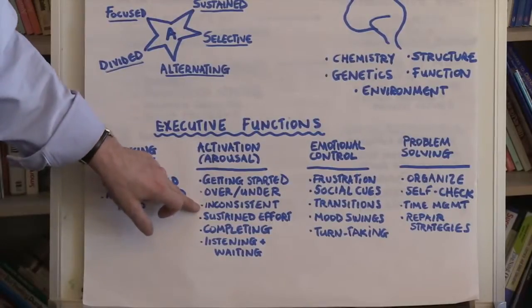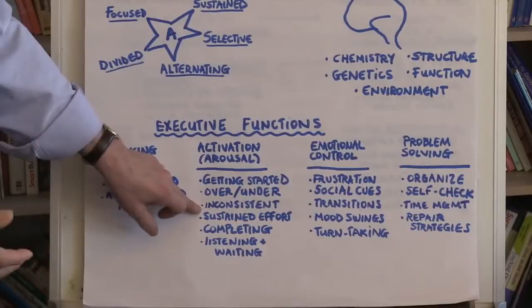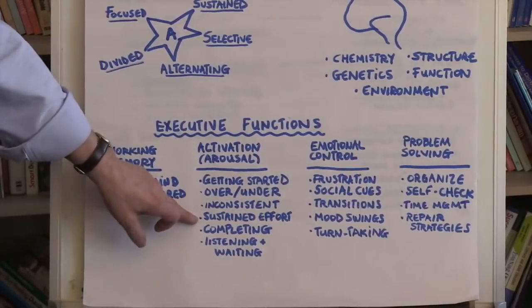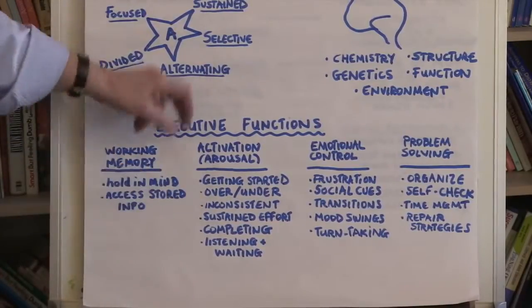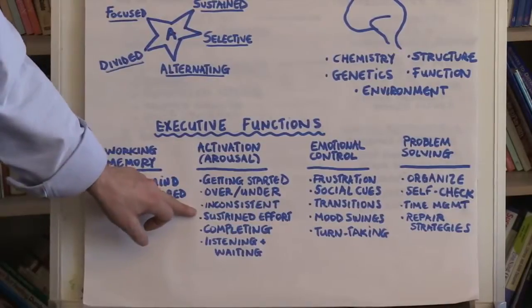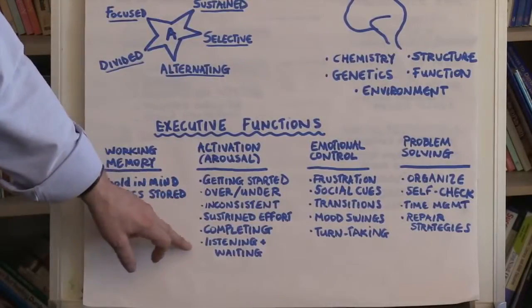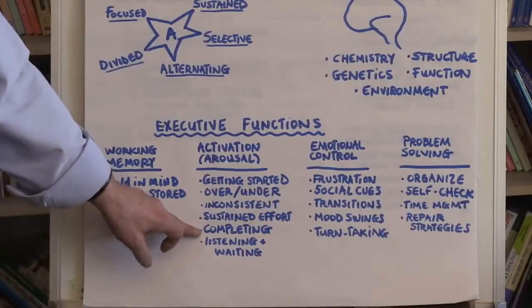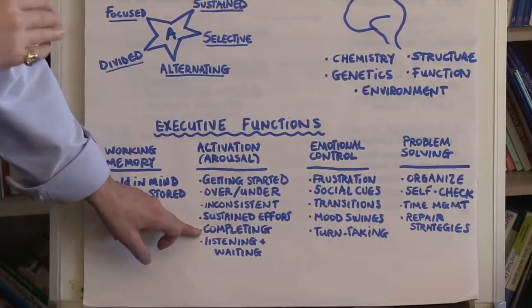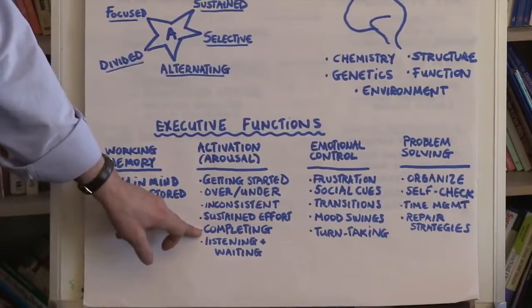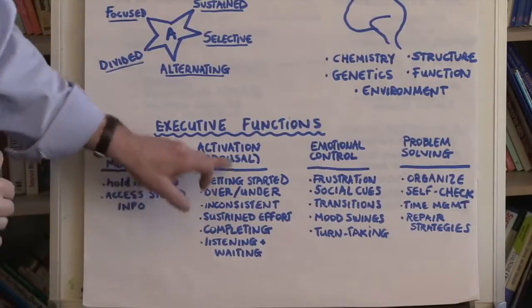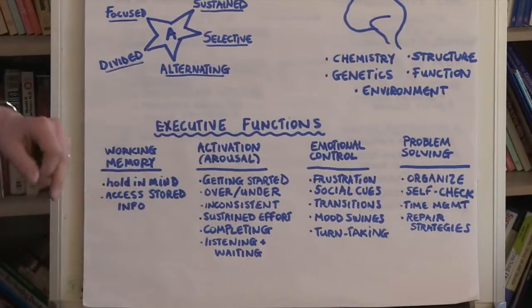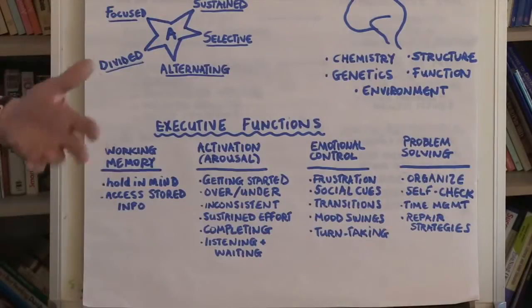They may be inconsistent. They may be able to do something sometimes but need prompting and urging and modeling other times. It's often difficult for individuals with ADHD to sustain the effort needed to complete tasks. And they often don't always complete those tasks in ways that follow instructions or start it in one place and end at a desired outcome. And they very often have difficulty listening and waiting, taking turns.